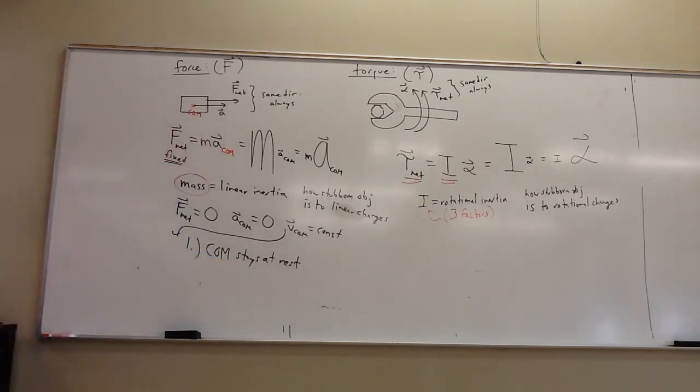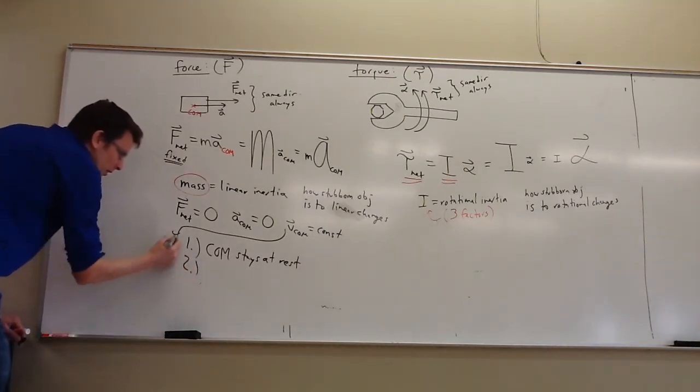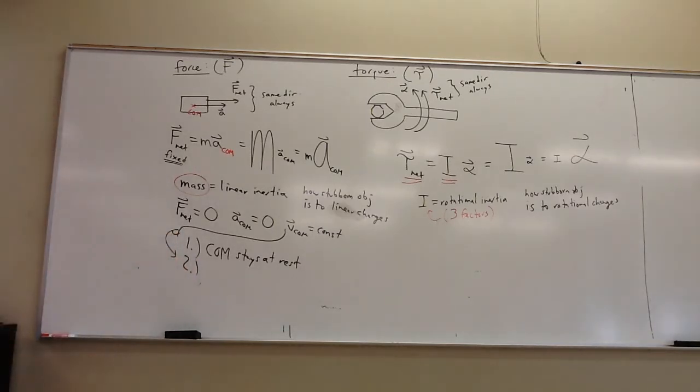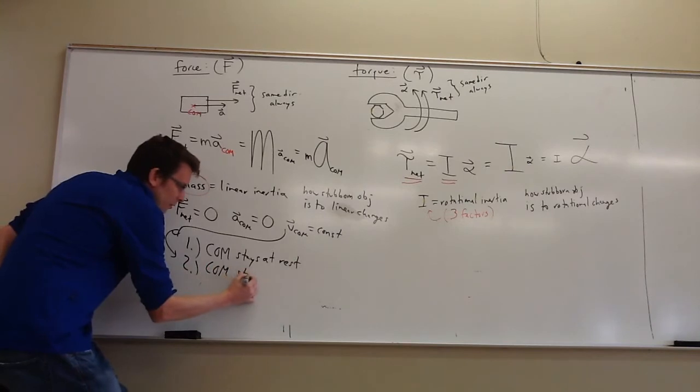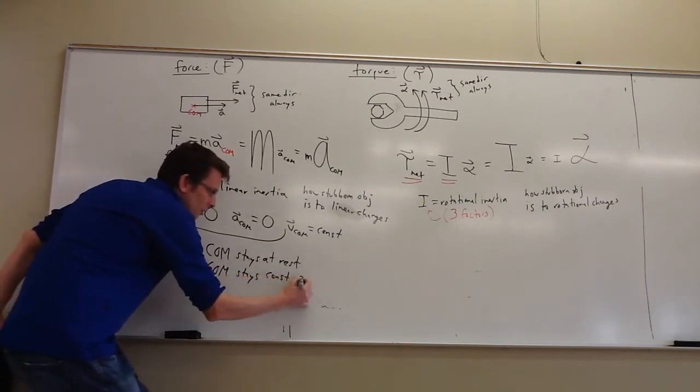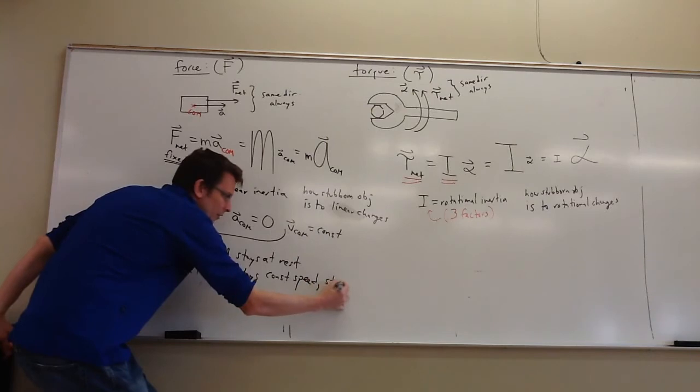That's kind of a special case that we like to remember. But of course, the other option is that it's a constant velocity that isn't zero, which means that the center of mass stays at a constant speed in a straight line.